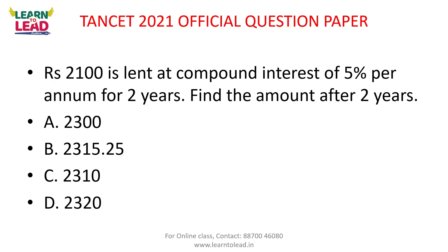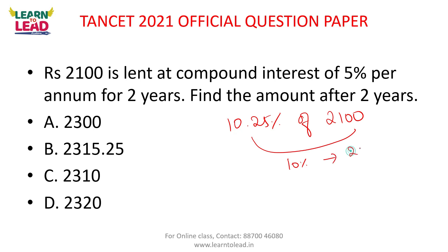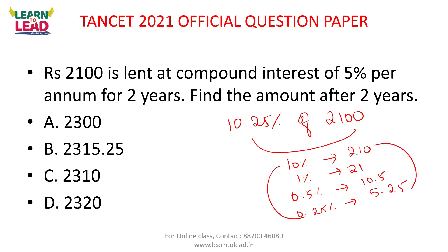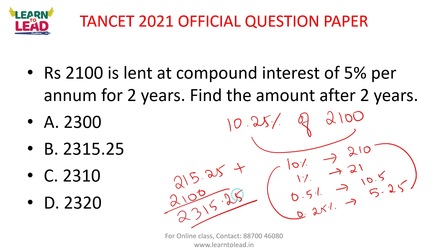This is compound interest. For simple interest in 1 year, we take 10.25%. Compound interest = 10.25% of 2,100. 10% of 2,100 = 210. 1% of 2,100 = 21. 0.5% = 10.5. 0.25% = 5.25. So 10.25% gives 210 + 5.25 = 215.25. Principle 2,100 + 215.25 = 2,315.25.